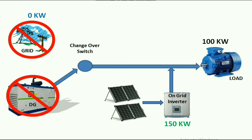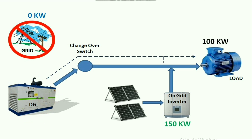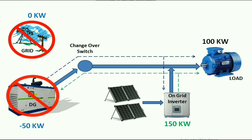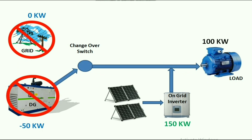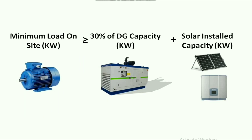If there is manual operation of the DG, the process ends by tripping the DG. If there is automatic operation of the DG, the DG turns on again as there is no power flow in the system, and the same process of turning on and turning off repeats — which is known as DG hunting. So we can conclude that for proper working of DG with solar, 30% of the load must remain on the DG and there should be no excess power from the solar.